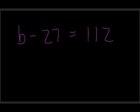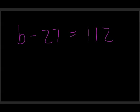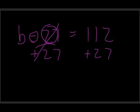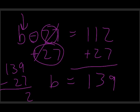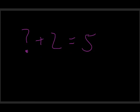Let's go even bigger: b minus 27 equals 112. This is why we need to learn the process — most of us can't mentally solve what minus 27 is 112. Since I'm subtracting in the original, I use the inverse operation and add 27 to both sides. The minus 27 and plus 27 cancel, leaving just b. I do the addition: 112 plus 27 equals 139, so b equals 139. Check: 139 minus 27 is indeed 112.